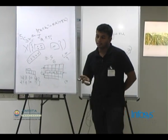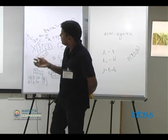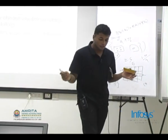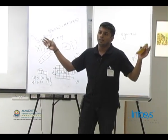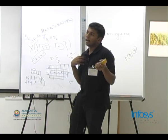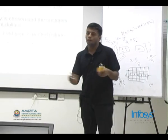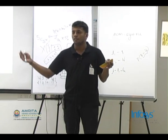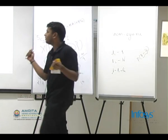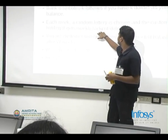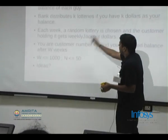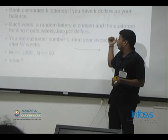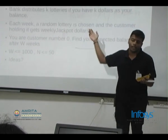Each account holder gets k lotteries if his account balance is k — account balances are integers. Each week the bank holds a random draw in which they choose one number between 1 and the total number of lotteries distributed, which equals the sum of all balances. The person holding the winning lottery number receives the weekly jackpot dollars. The parameters of this problem are the weekly jackpot J, k, n, and w.